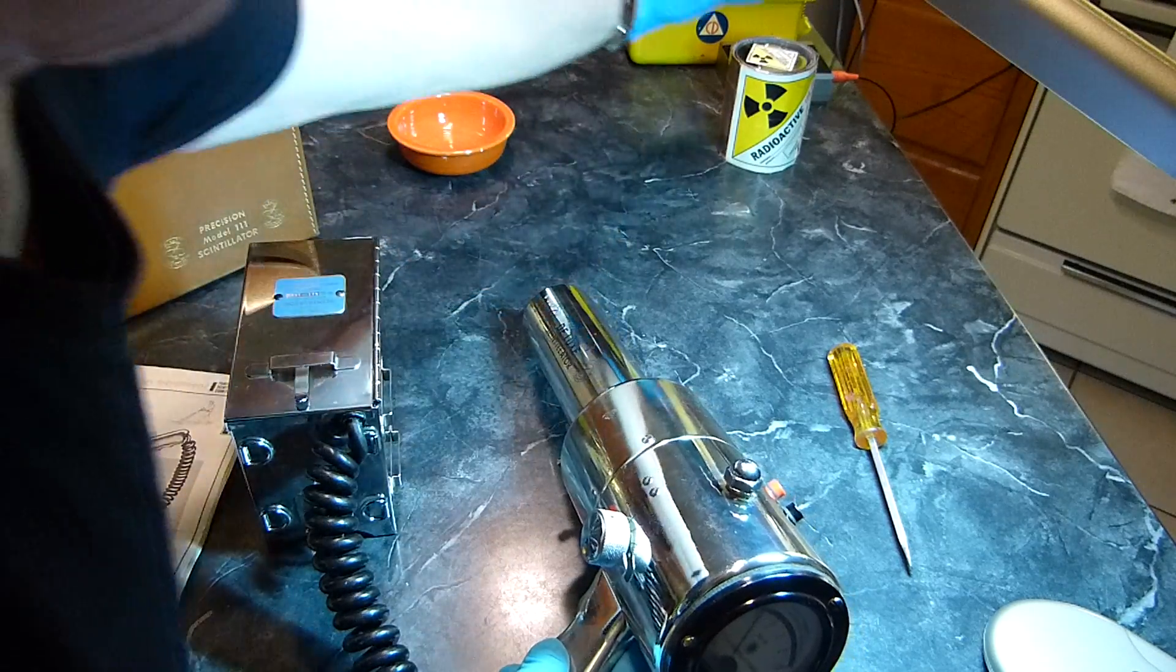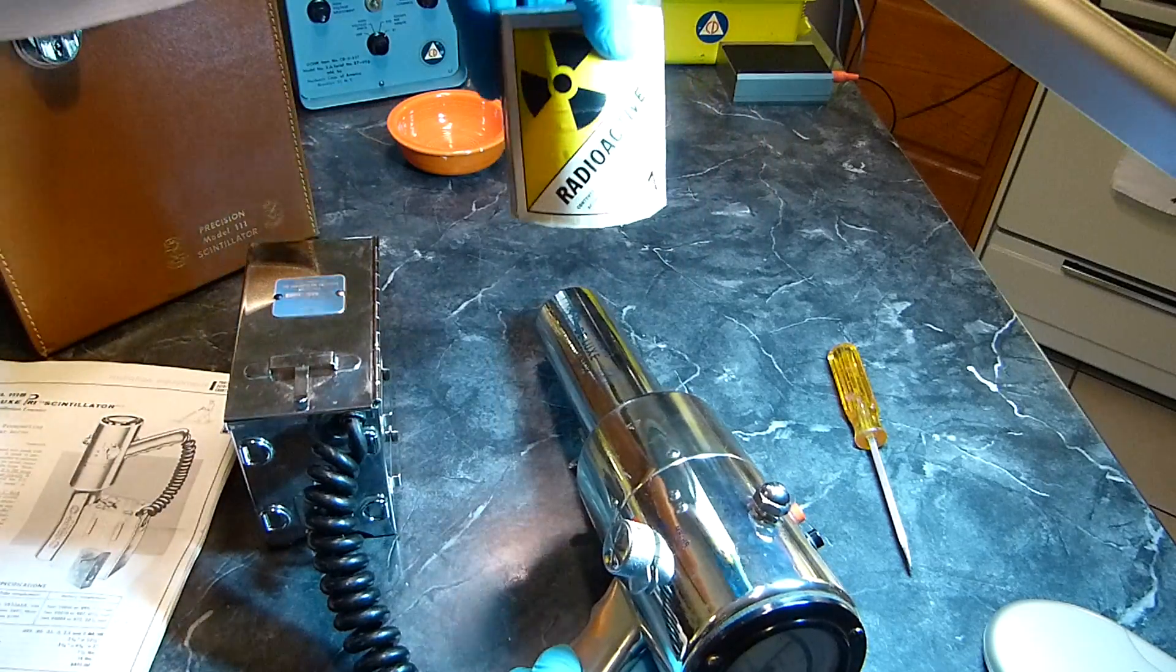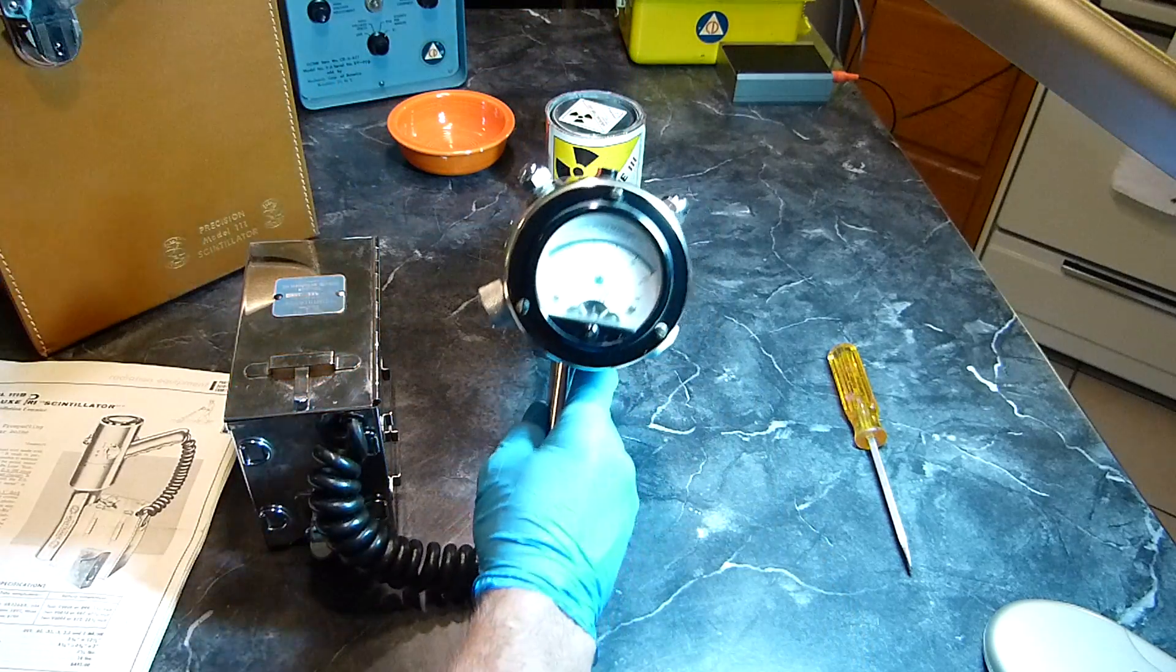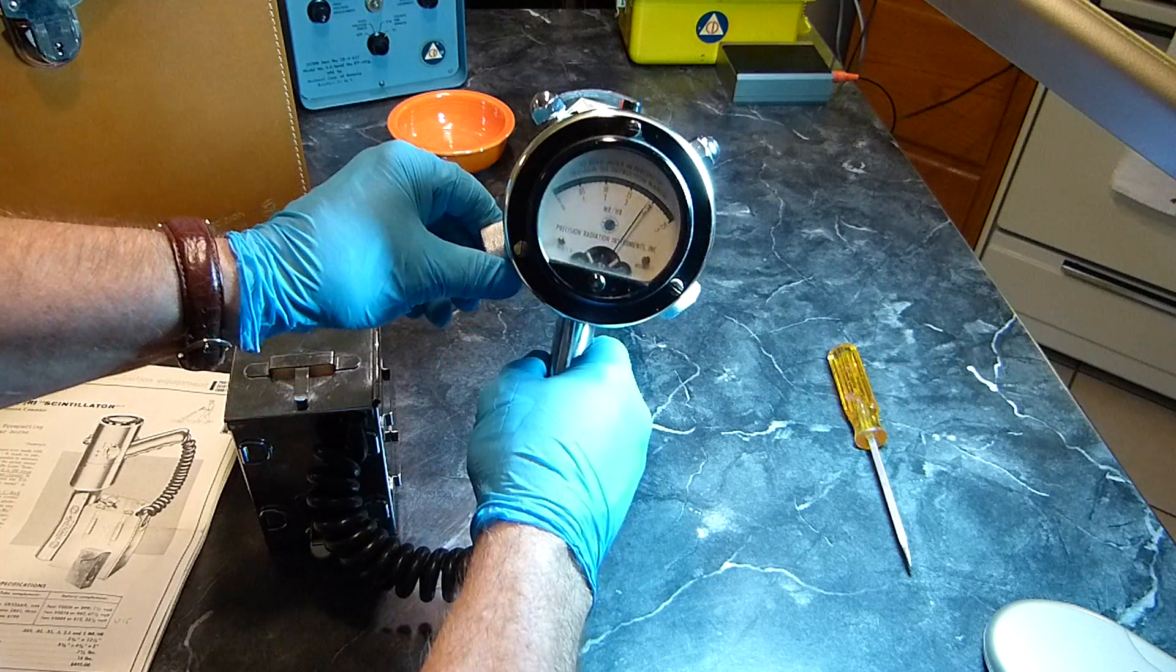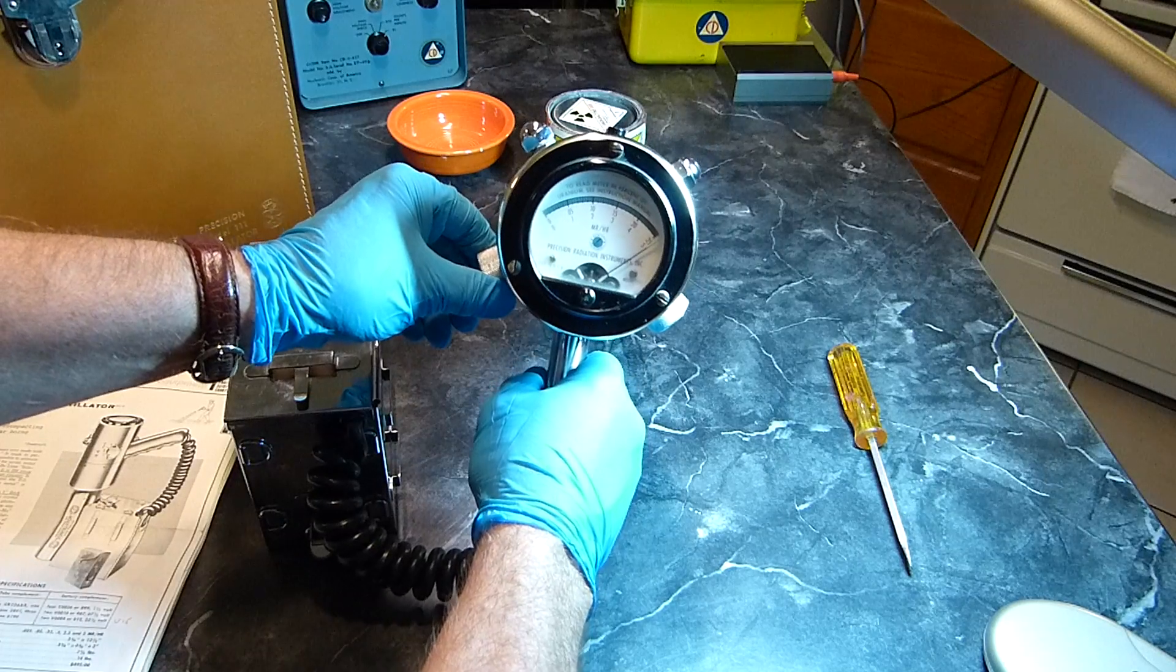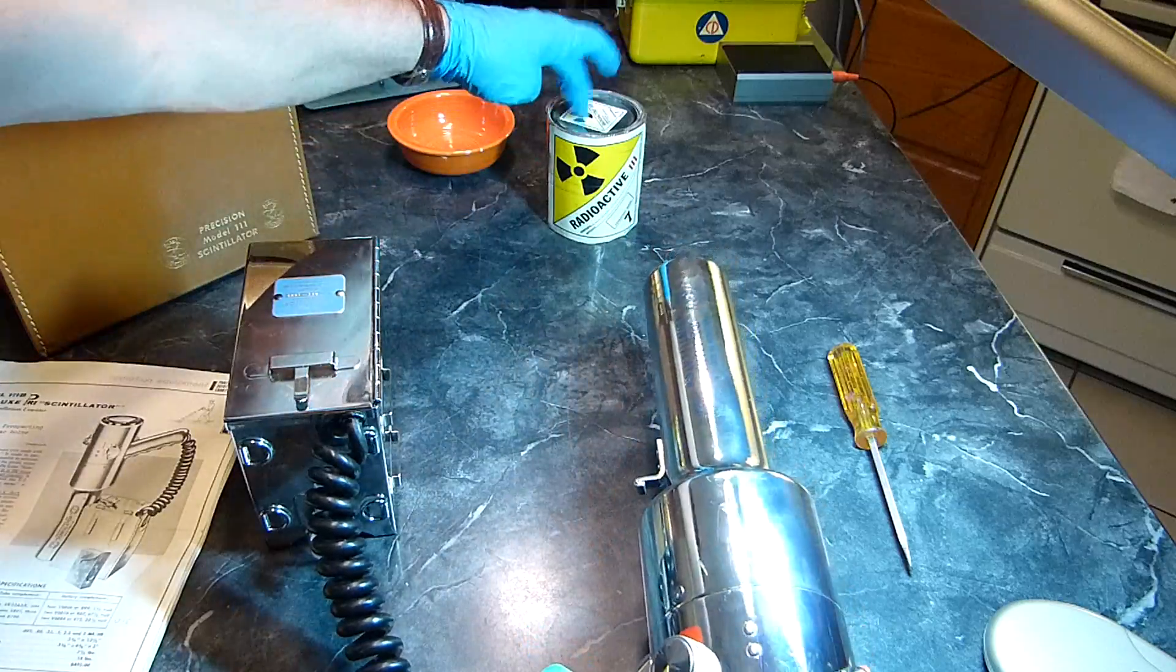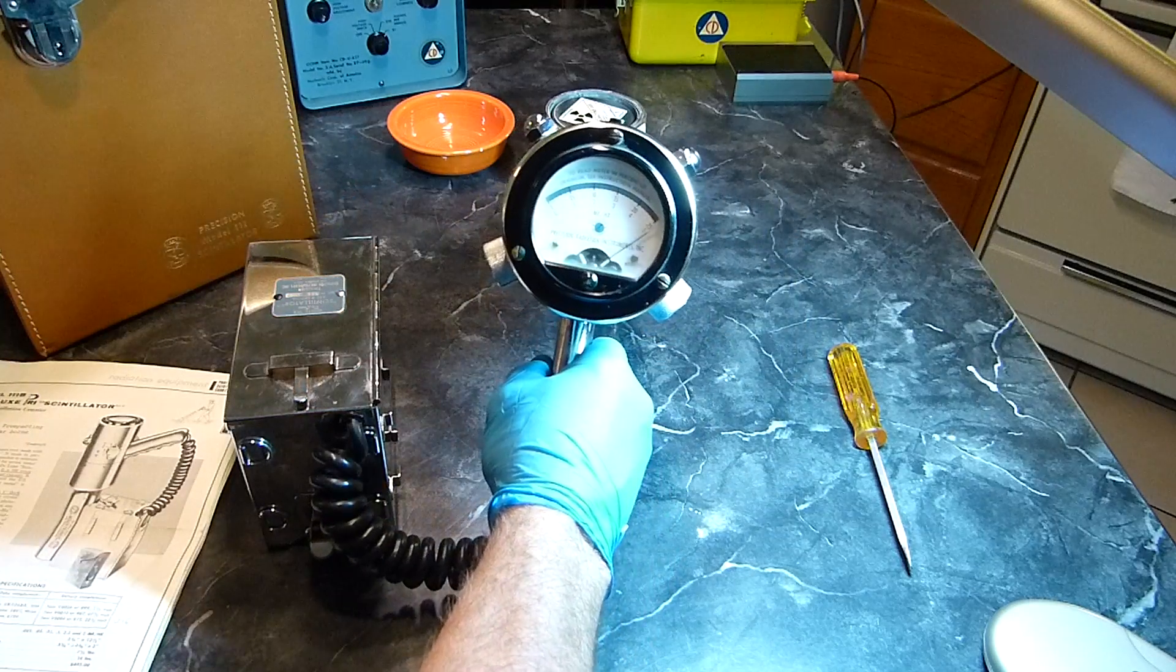Now, I have some perfectly legal, pretty hot specimens right here. If I put it up close to that thing, you can see it pegs it. So, I have to crank it down. See there? It pegs it. It does pretty good. And that's just gamma, because it's coming through this metal, this lead, and then this steel right here, too. So, there you go. But it does work, huh?